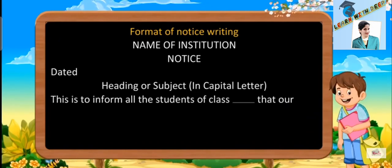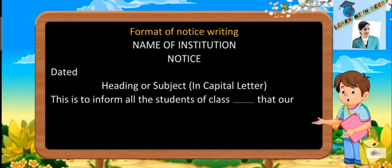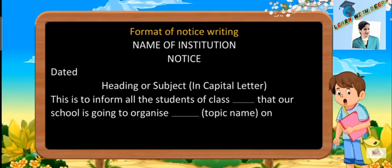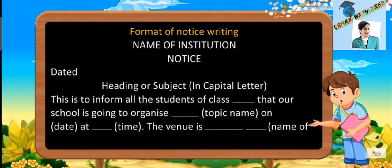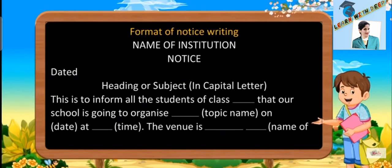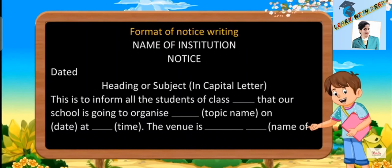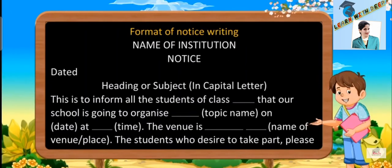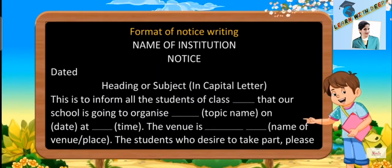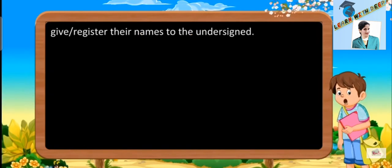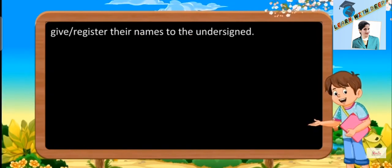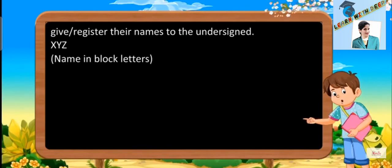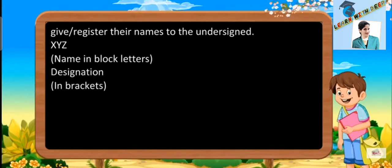This is to inform all the students of class [dash] that our school is going to organize [dash topic name] on [dash date] at [dash time]. The venue is [dash name of place or venue]. The students who desire to take part please give or register their names to the undersigned. XYZ — name in block letters, designation in brackets.